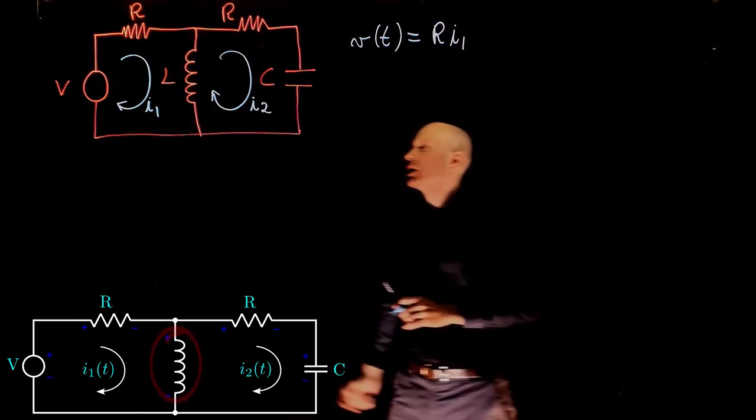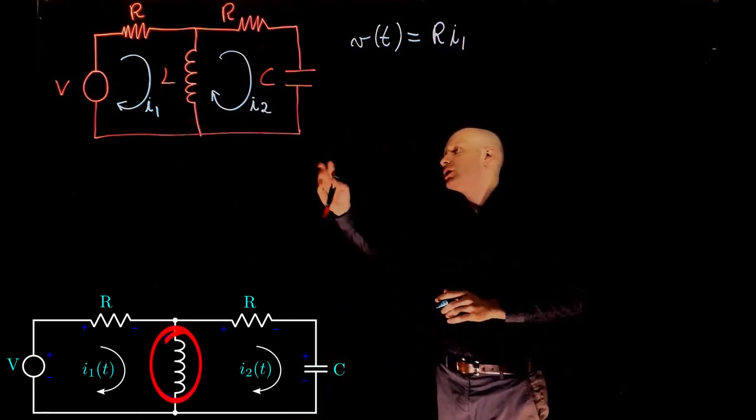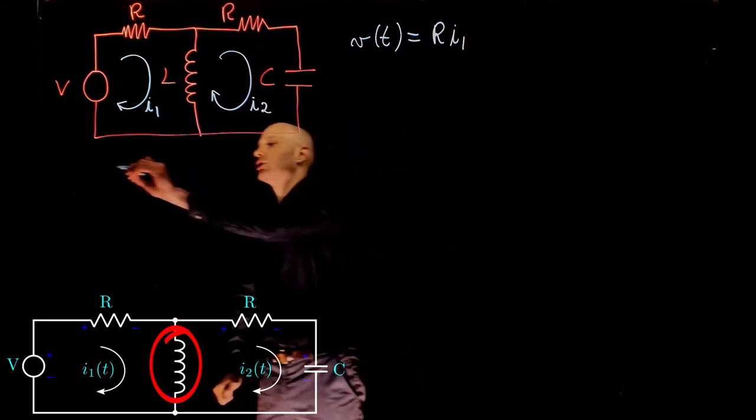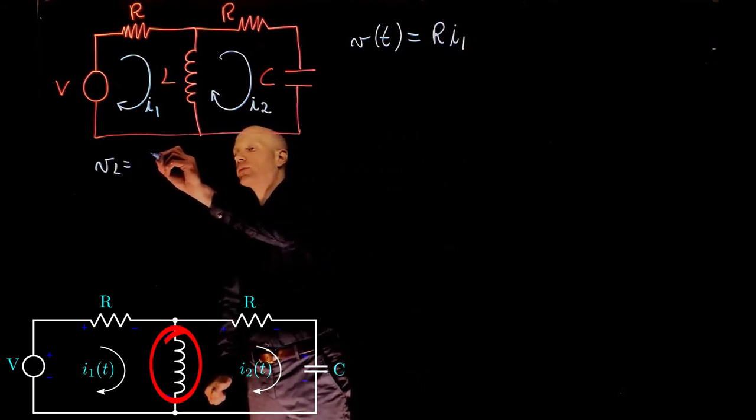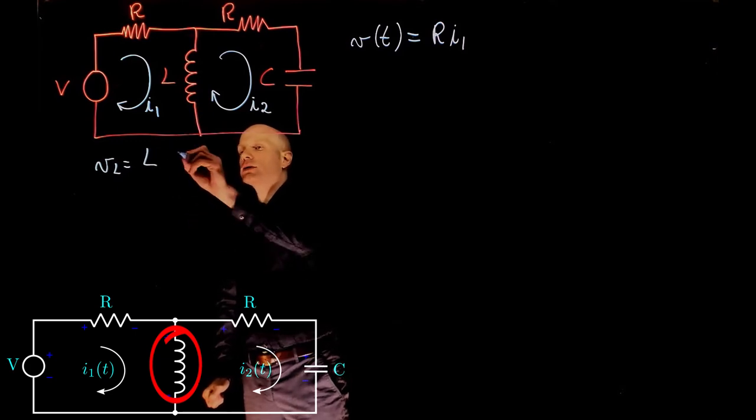The current then goes through the inductor and we know that the relation there and the voltage across the inductor is VL equals to L, the inductance, times the time derivative of the current.